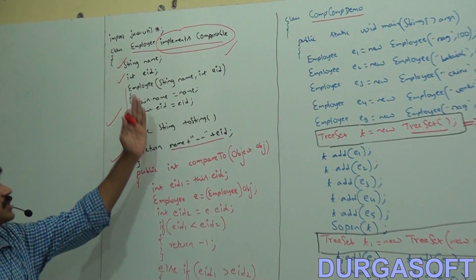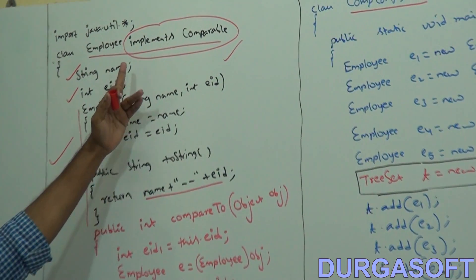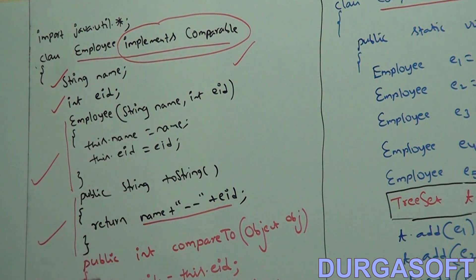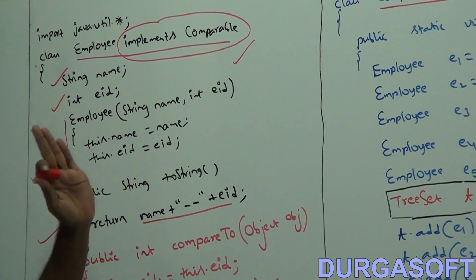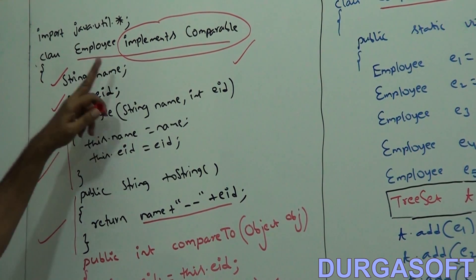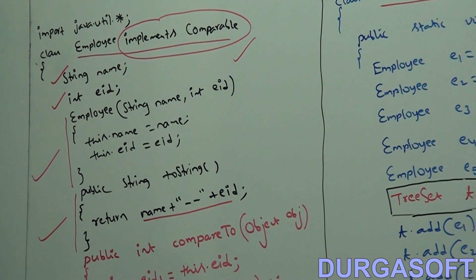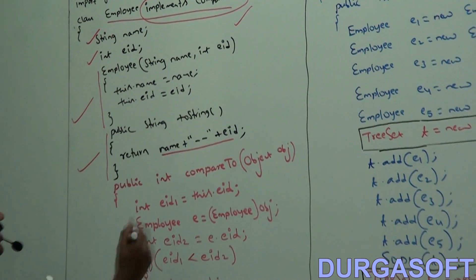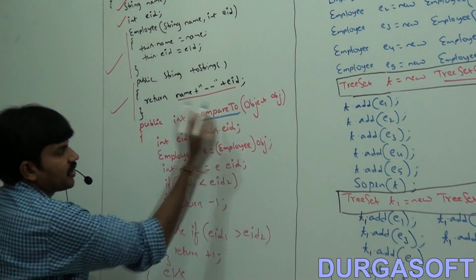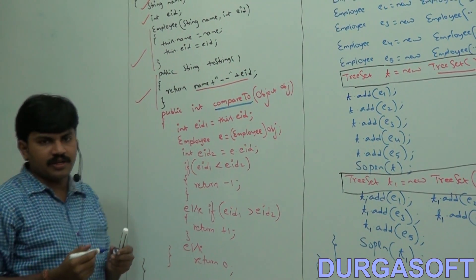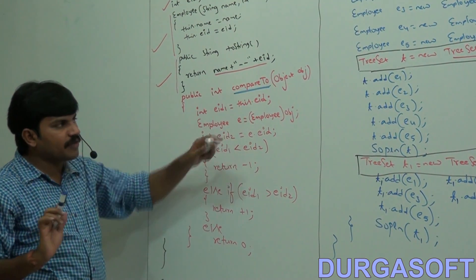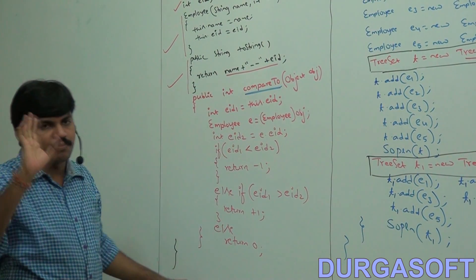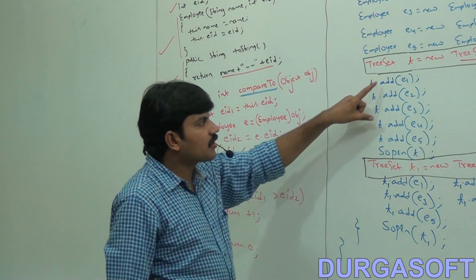The person who is writing the Employee class is responsible to define the default natural sorting order by implementing the Comparable interface. Whenever a class implements Comparable, we are compelled to provide implementation for the compareTo method.